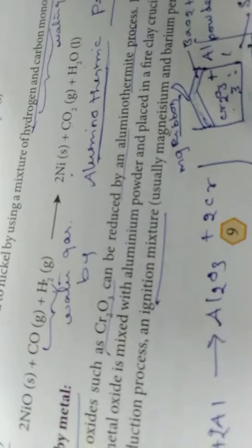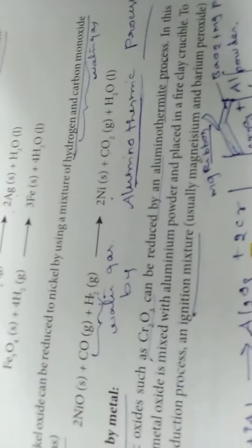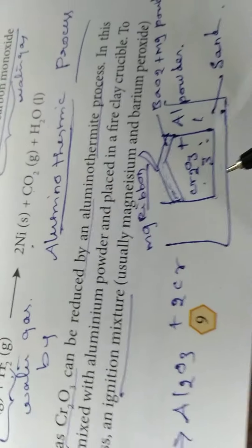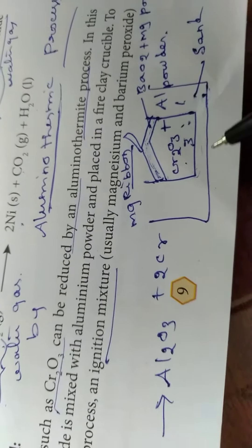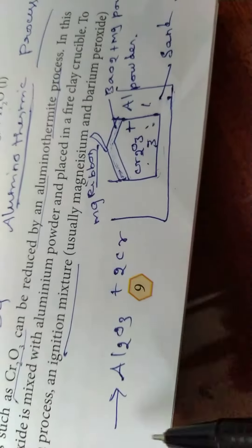The complete fire clay crucible is placed in a sand bath. Because during this process, large amounts of heat and energy will be produced. In order to prevent the explosive reaction, this is placed in a sand bath.